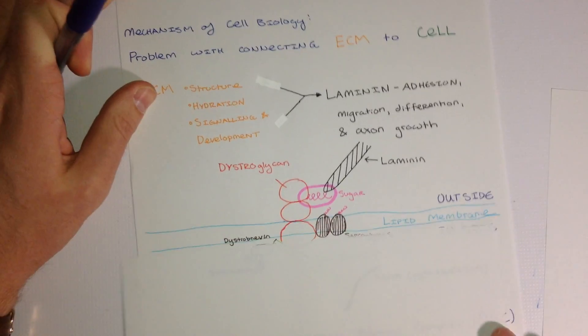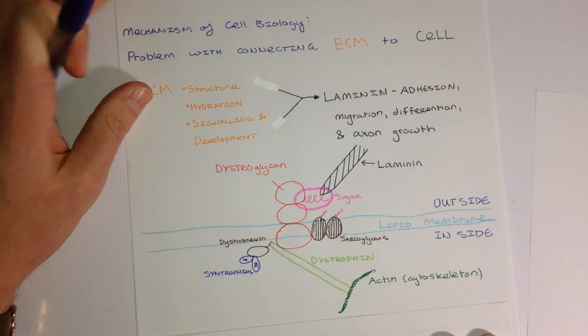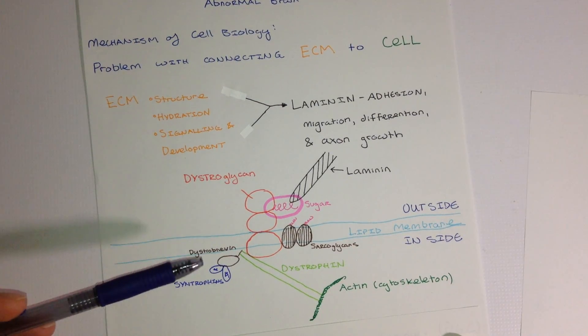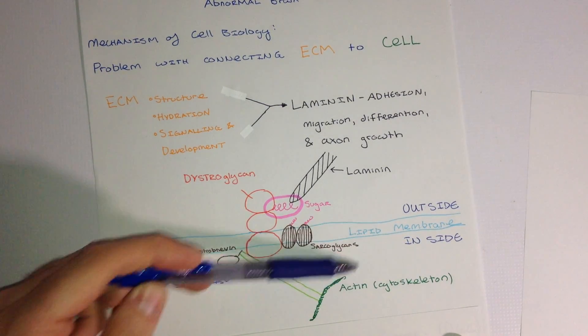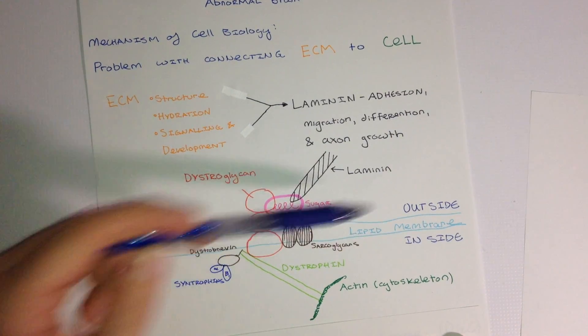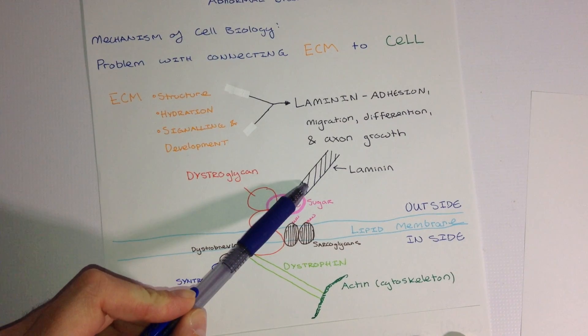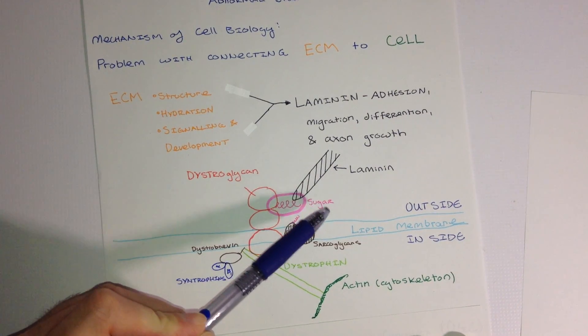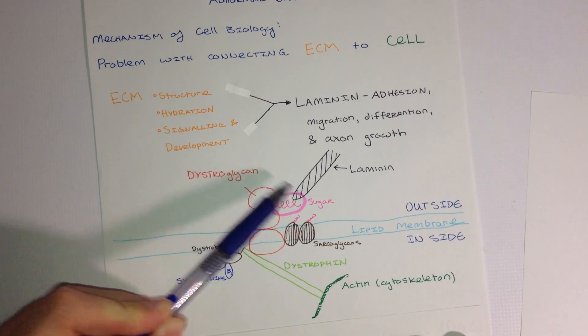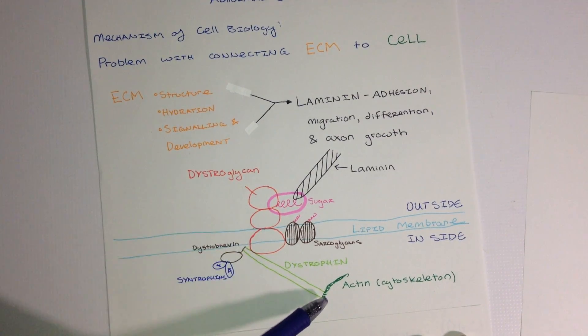So, here I have a cartoon representation of an inside of a cell, the lipid membrane, and the outside of the cell. And how the laminin protein is connected via a complex to the cell itself.